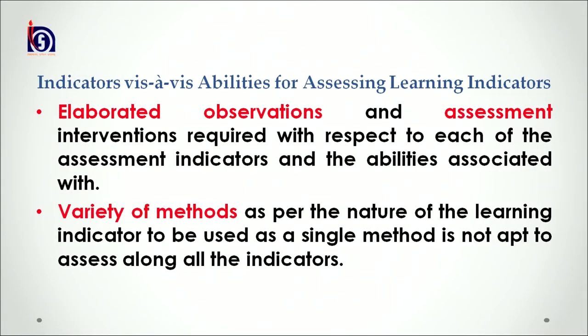The tenth indicator is cooperation, with associated abilities of taking responsibility and initiative, sharing and working together. We can say that elaborated observation and assessment intervention is required for each assessment indicator and its associated abilities. A variety of methods should be used as per the nature of each learning indicator, since a single method is not appropriate for assessing all indicators.